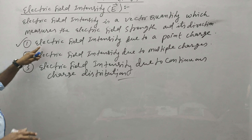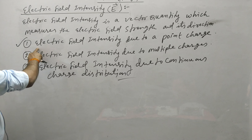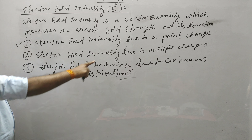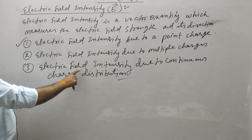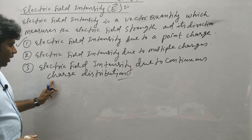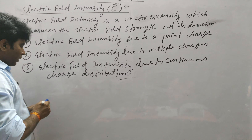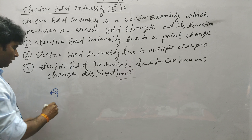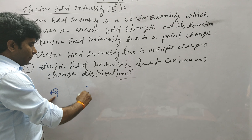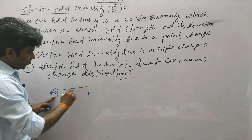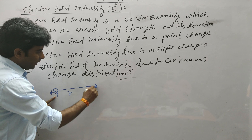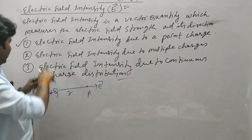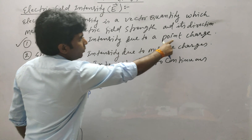We will discuss three cases. First: electric field intensity due to a point charge. Second: electric field intensity due to multiple charges. Third: electric field intensity due to continuous charge distribution. For the first case, suppose there is a charge +Q, and at a particular point P at separation R, we need to find the electric field strength and its direction due to this charge.